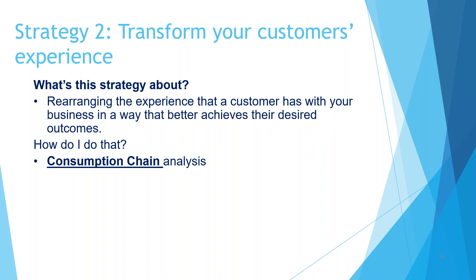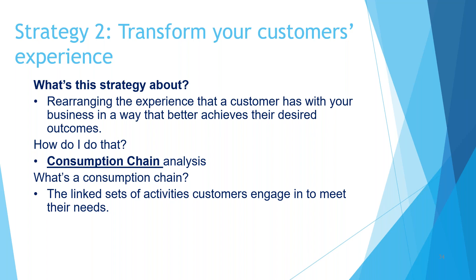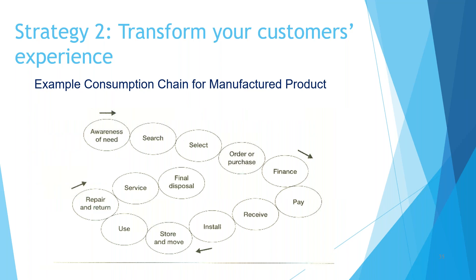The tool for that is called consumption chain analysis. A consumption chain is a linked set of activities that customers engage in to meet their needs. Here's an example for a manufactured product — this goes all the way through from when someone first becomes aware of what they might need, be it a washing machine, circular saw, car or business service. There's a process to go through: searching, selecting, ordering, financing, paying, all the way through to when people use the product and even dispose of it in the end. Disposing of a product can be a problematic process for some people, and there can be opportunities to innovate around disposal.